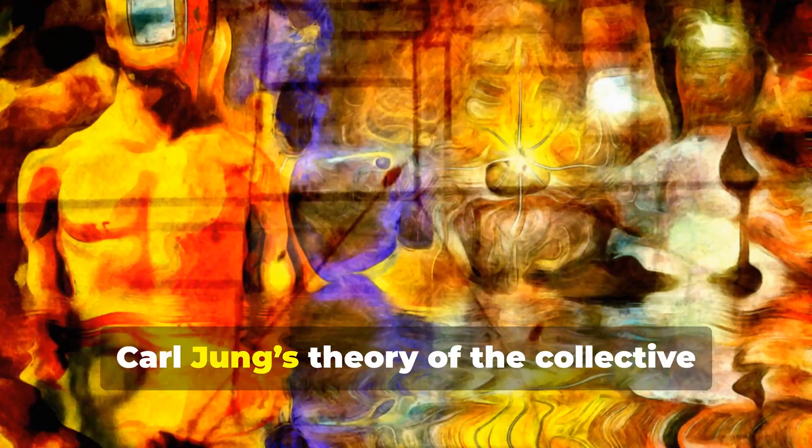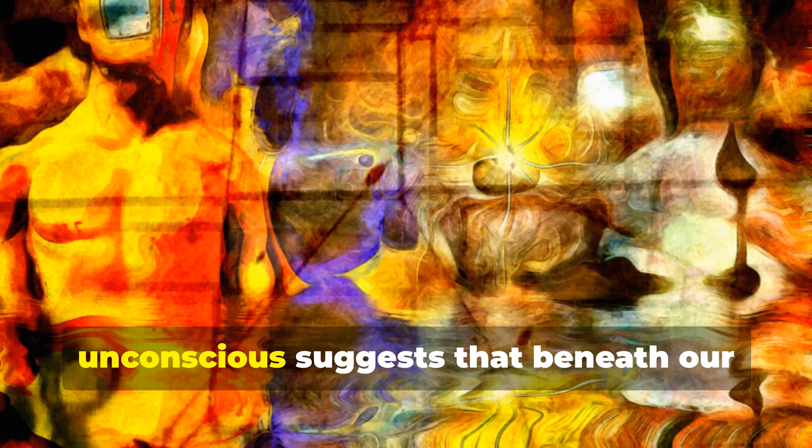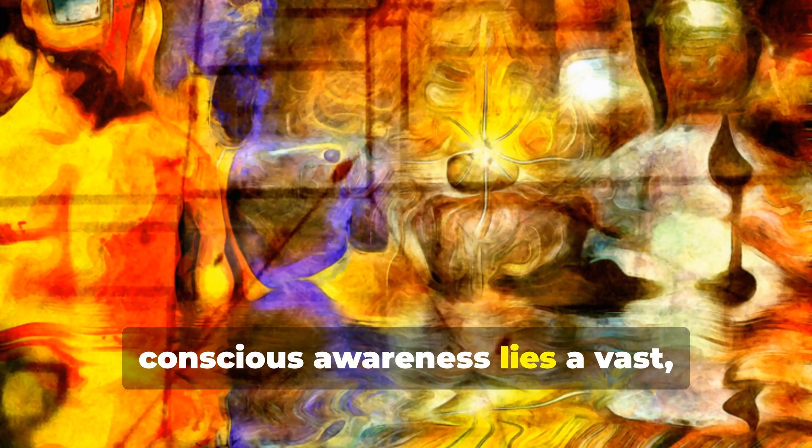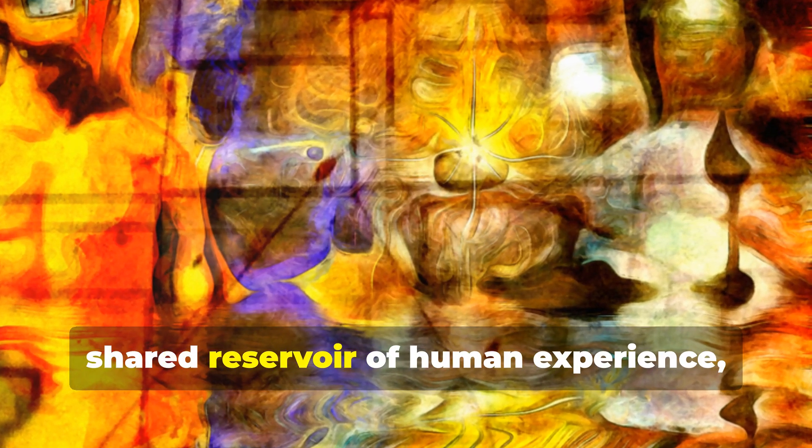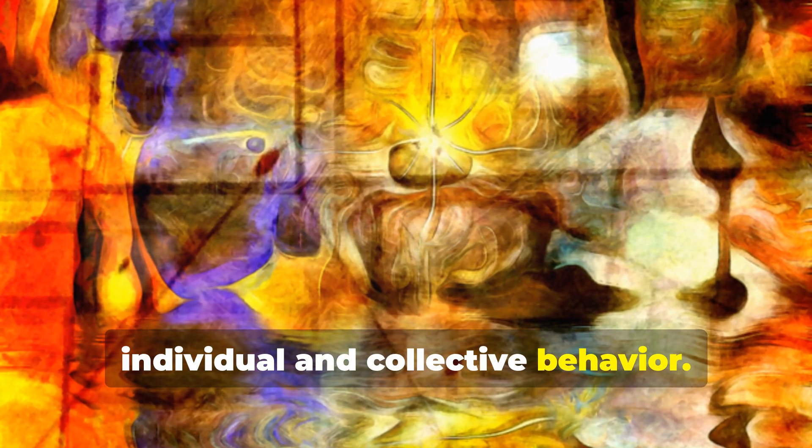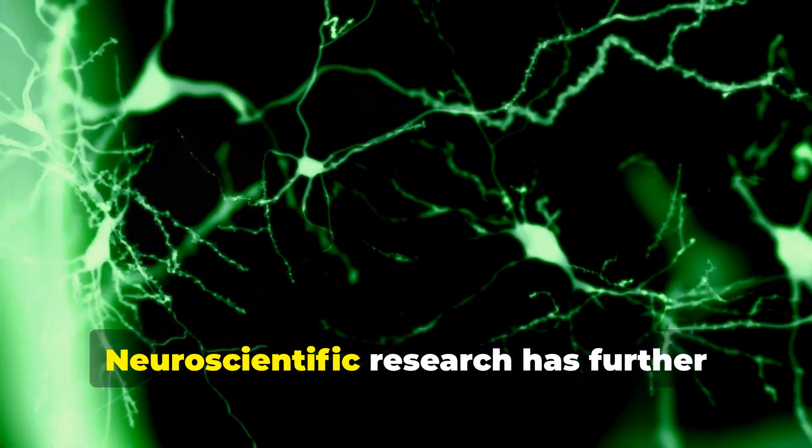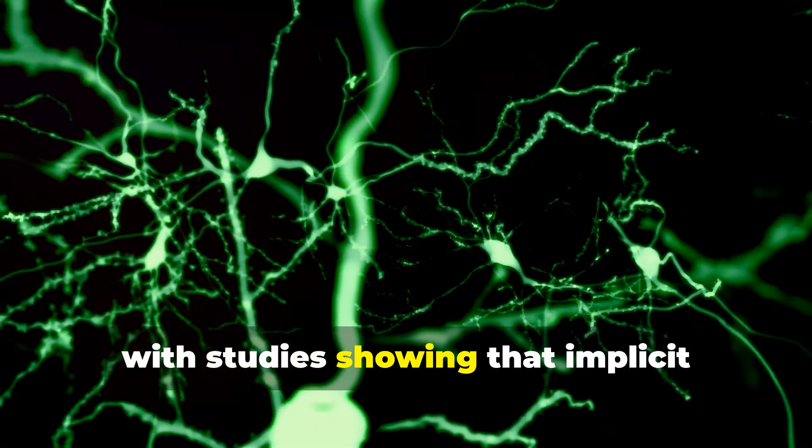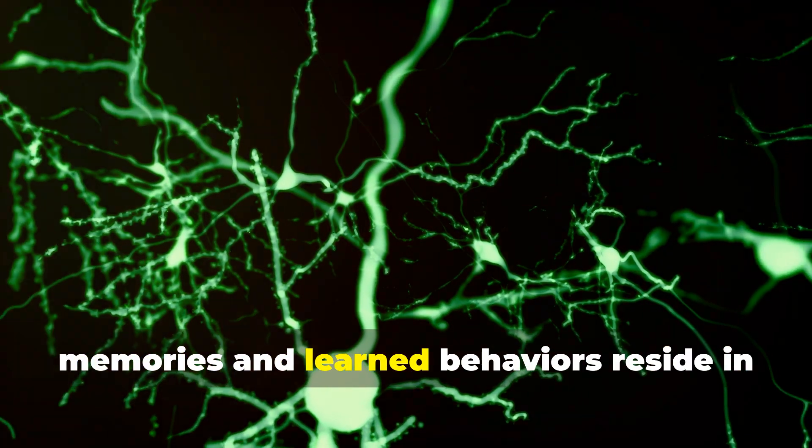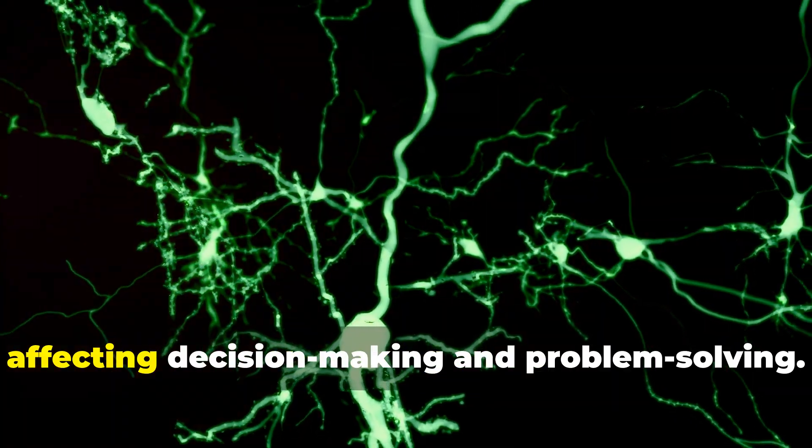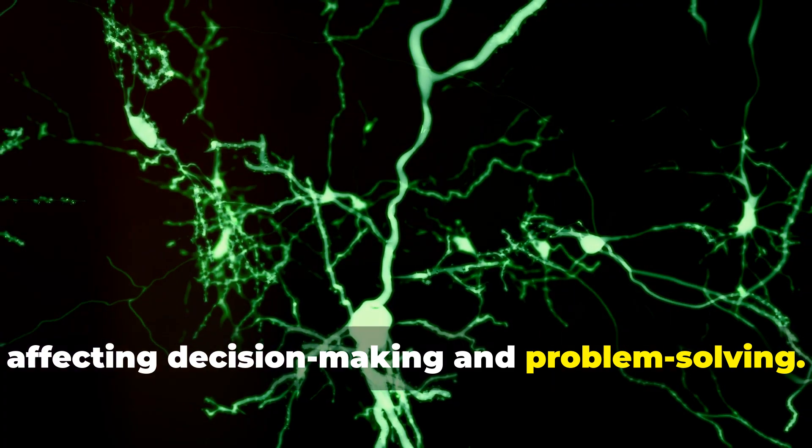Carl Jung's theory of the collective unconscious suggests that beneath our conscious awareness lies a vast, shared reservoir of human experience, archetypes, and symbols that influence both individual and collective behavior. Neuroscientific research has further supported this concept, with studies showing that implicit memories and learned behaviors reside in the subconscious mind, affecting decision-making and problem-solving.